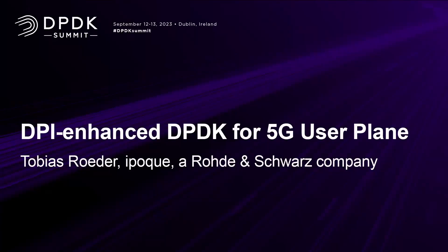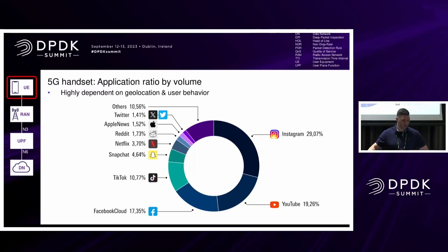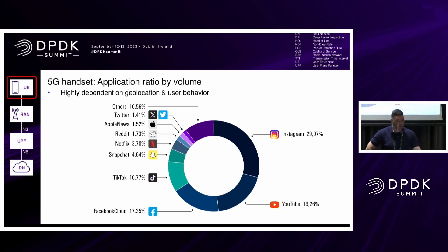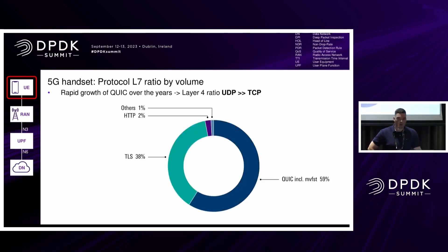Let's get started. If you take a typical handset nowadays connected to 5G standalone, you're going to see, depending on geolocation and user behavior, the majority of traffic being video-based and audio-based applications. Why does it matter? If we break it down using DPI into layer 7 protocols, you actually see over the years the growth of the QUIC protocol, which is UDP-based over TLS.